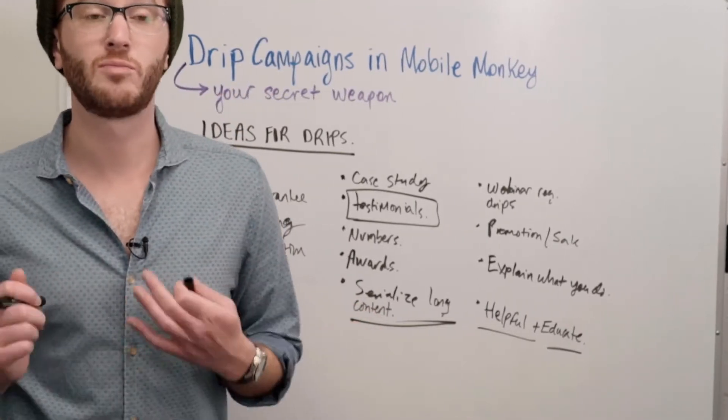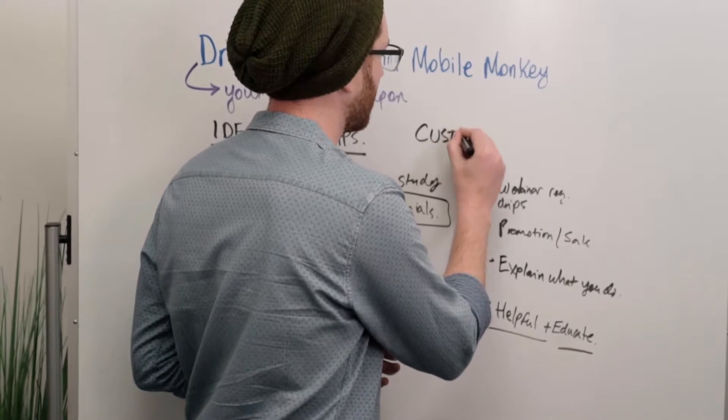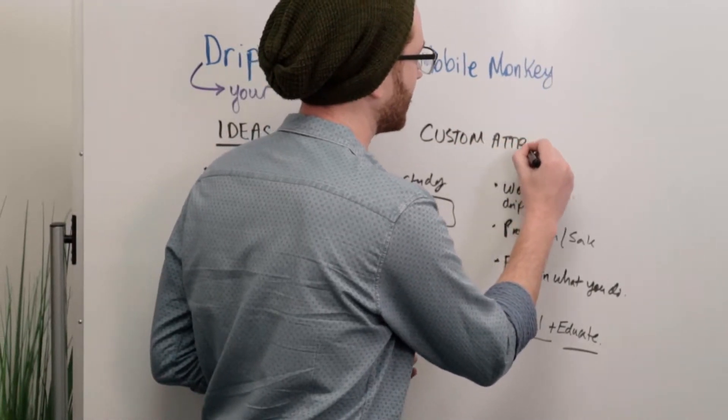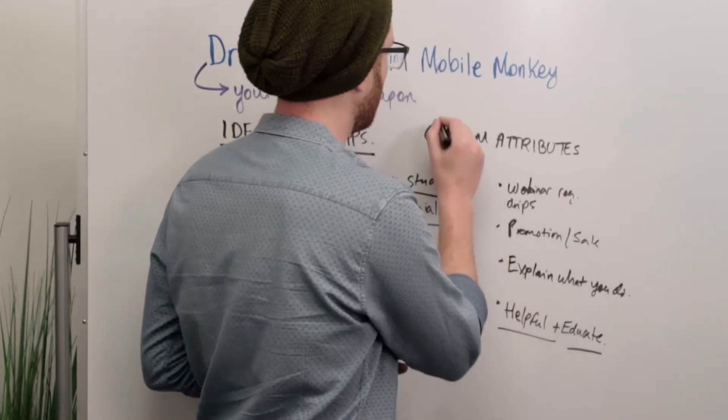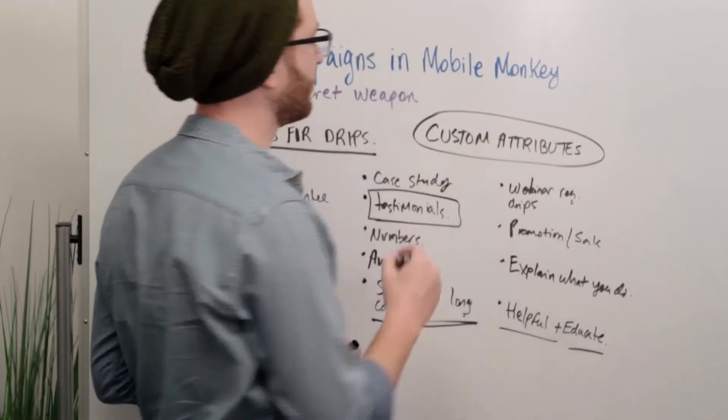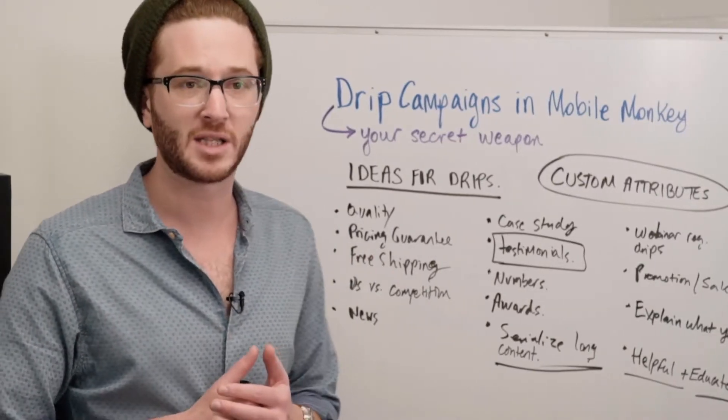And always, always remember, like we've spoken about, use your custom attributes that you've been collecting. Use your custom attributes in your drip campaigns. That's why you've been collecting them. Use them to personalize the message.